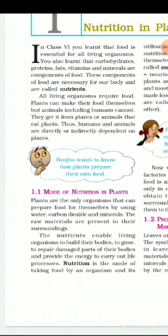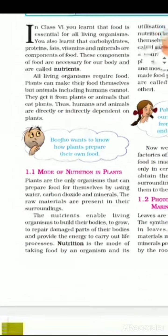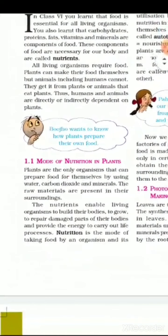Now let's discuss modes of nutrition in plants. Section 1.1: modes of nutrition in plants. Plants are the only organisms that can prepare food for themselves by using water, carbon dioxide, and minerals. The raw materials are present in their surroundings.